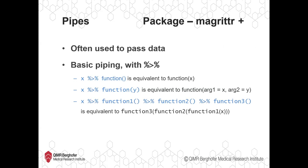One of the benefits of pipes, especially within the Tidyverse, is that a lot of the Tidyverse functions pass data sets as output. As opposed to earlier R functions that might produce a vector or a single value, many Tidyverse functions will produce the whole data frame with just one variable changed. Because it keeps passing a whole data set each time, that data set can just continuously pass through pipes to different functions without having to continuously make and save intermediate objects.